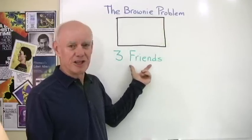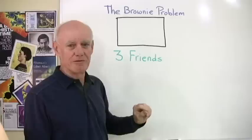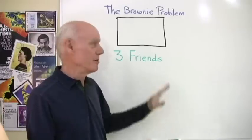There's three friends that are going to get together and bake a pan full of brownies. What happens is that only two of the friends show up and the third friend is late, so the two friends go ahead and they make the pan of brownies.